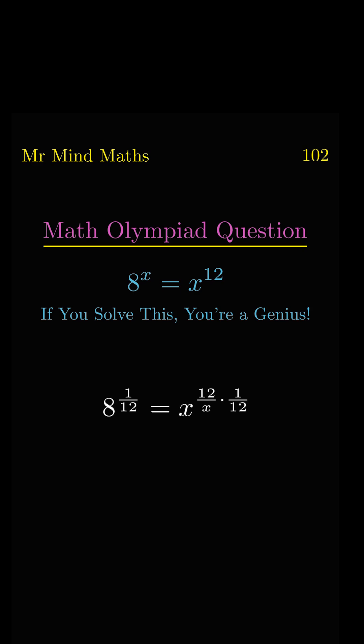So finally, we will get... Now it will convert it into 2 power 3. On the left-hand side, 3 and 1 over 12 will get cancelled, so we will get 2 power 1 over 4.